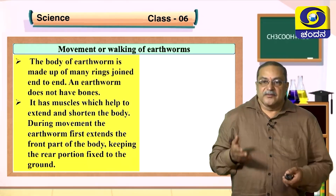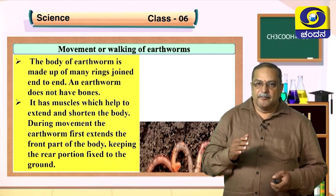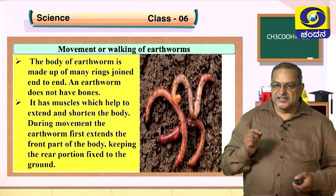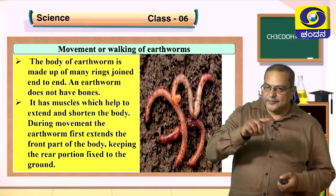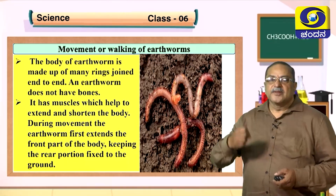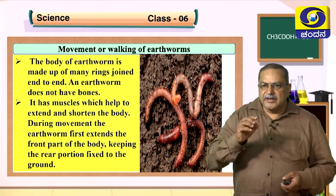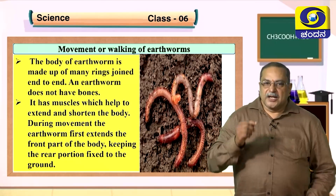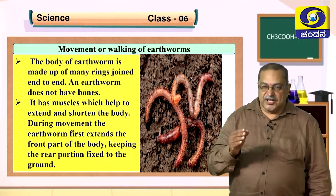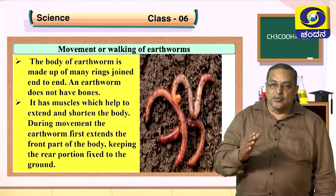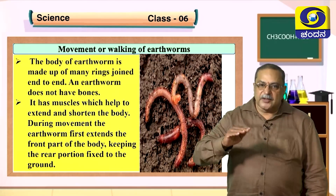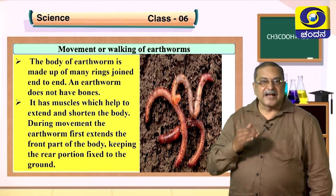The body of the earthworm is made up of many ring-like structures. You can notice the rings from the head to the tail end. The body is made up of many rings joined end to end. The earthworm does not have bones — it is a boneless animal. It has muscles which help to extend and shorten the body during movement. The earthworm first extends the front part while keeping the rear position fixed to the ground.